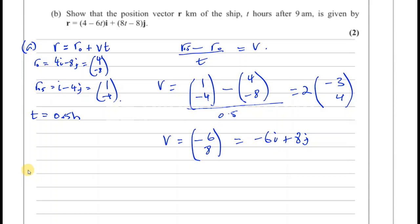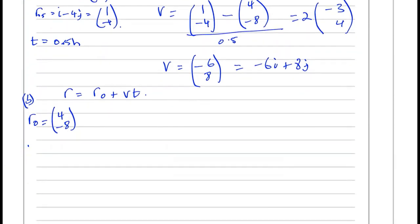Part B tells us to show that the position vector R of the ship, T hours after 9am, is given by this vector here. So we know that, again, R is equal to R0 plus VT. So now we've got to find what R is for any time T. So the answer is going to be in terms of T. But we know now that R0, well, we know R0 is 4 minus 8 as before. And we know now the velocity. The velocity vector is minus 6 and 8. And the time is now general time. So we can write a vector, R equals, you're going to have R0, which is 4 minus 8, plus T times the velocity, which is minus 6 and 8.